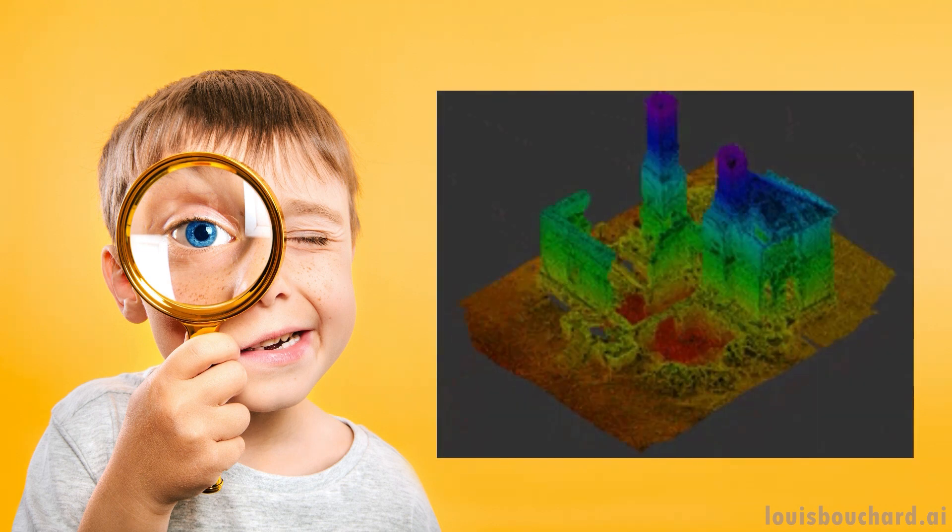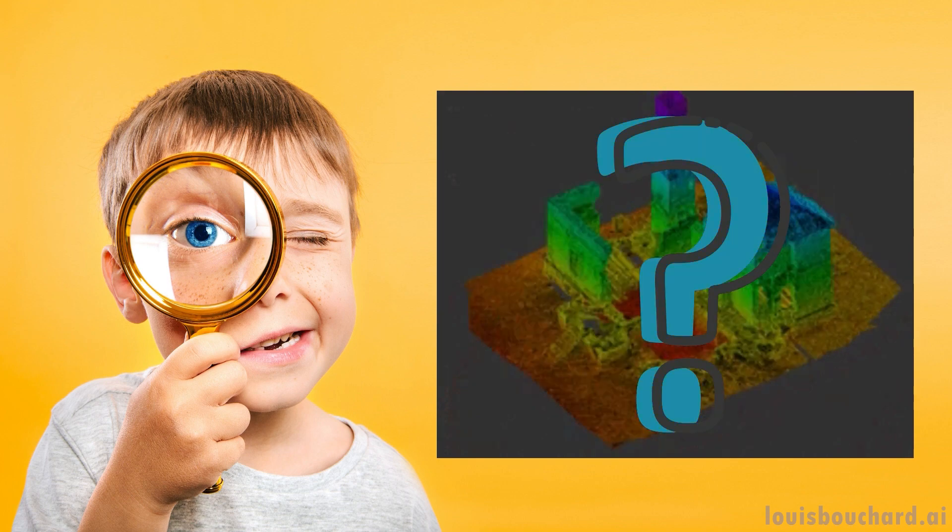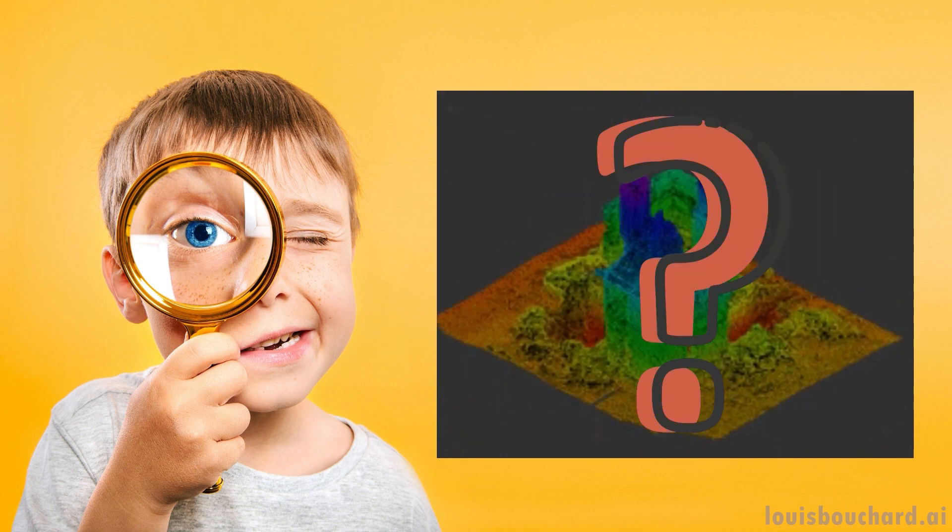Still, how can we efficiently combine this information and have the vehicle understand it? And what does the vehicle end up seeing? Only points everywhere? Is it enough for driving on the roads? We will look into this with a new research paper by Waymo and Google Research.